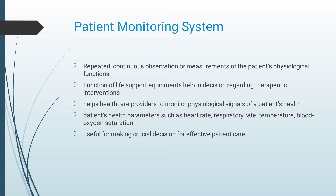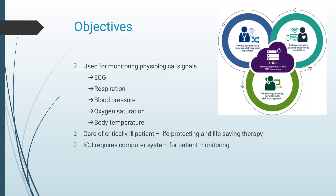It is also useful for making crucial decisions for effective patient care. Objectives: it is used for monitoring physiological signals. For example, ECG (electrocardiogram) is the measurement of heart rate — for a healthy adult it ranges from 60 to 100 beats per minute. Respiration: a normal adult breathes 12 to 16 times per minute. Blood pressure ranges from 80 to 120. Oxygen saturation ranges around 95%.